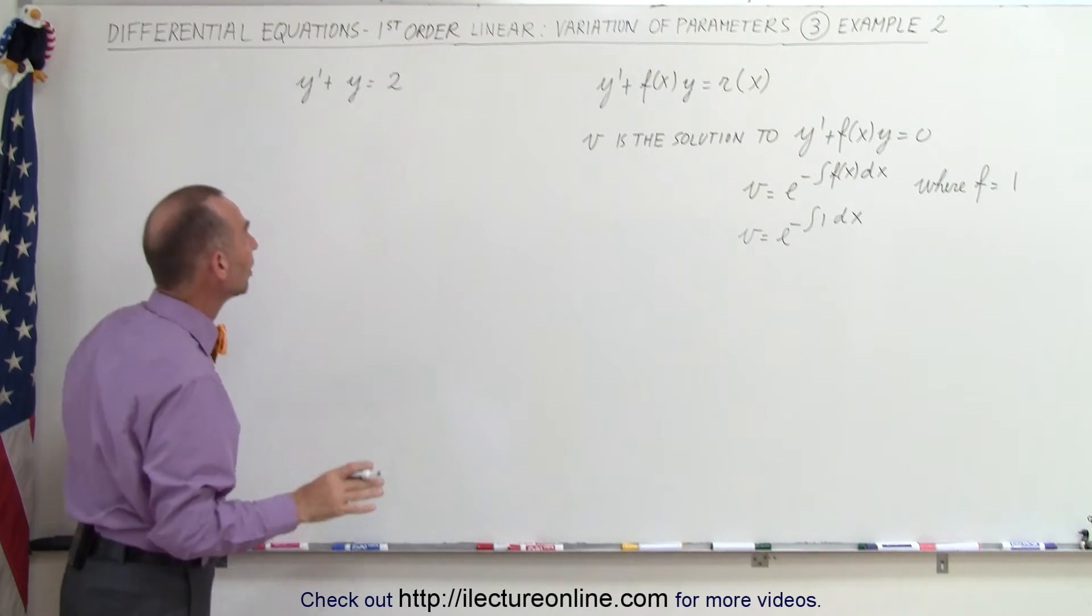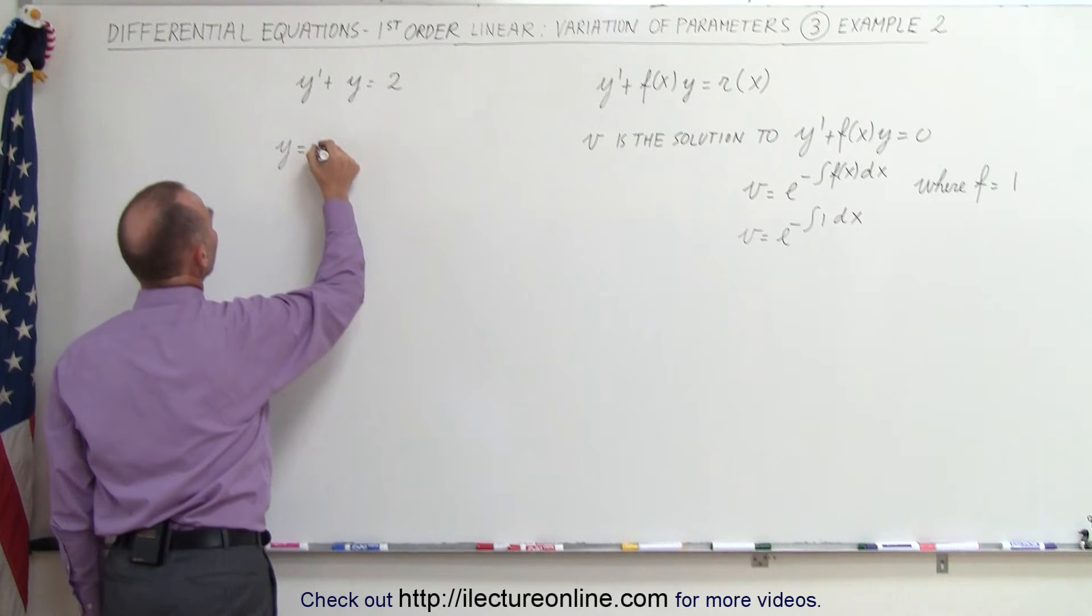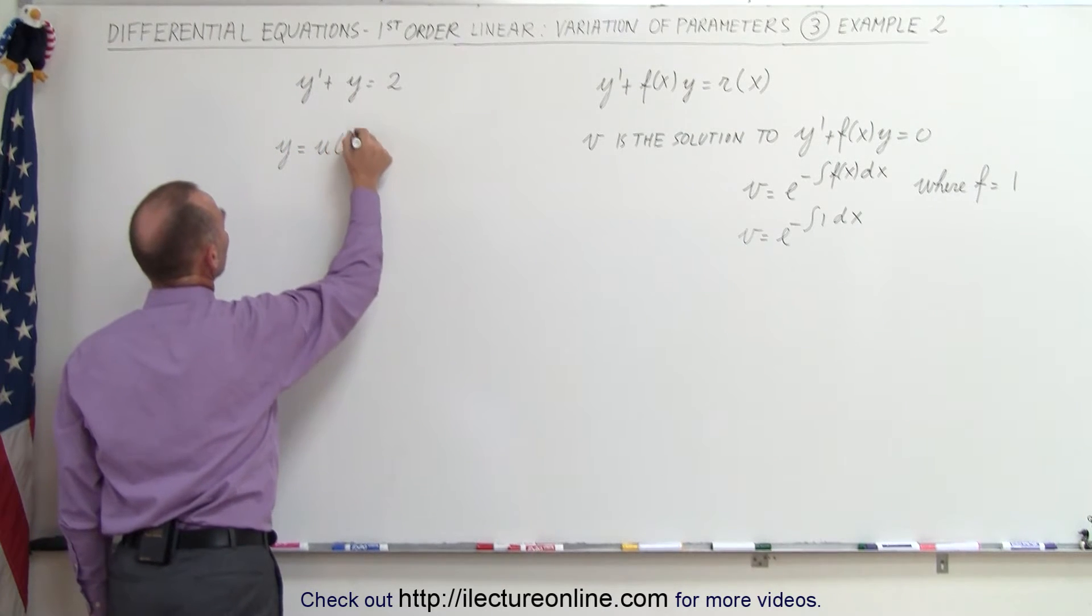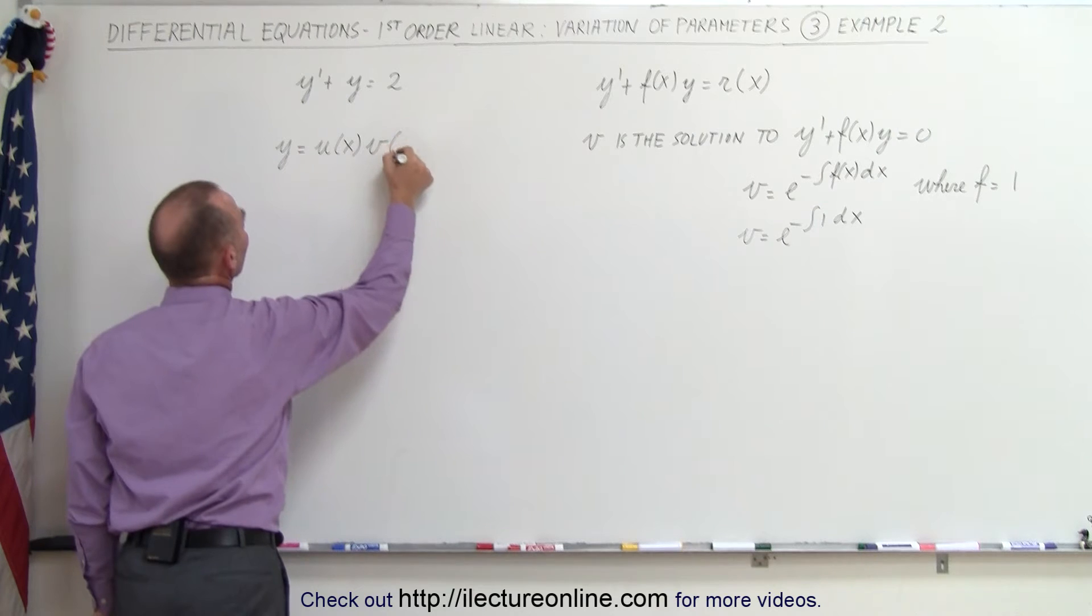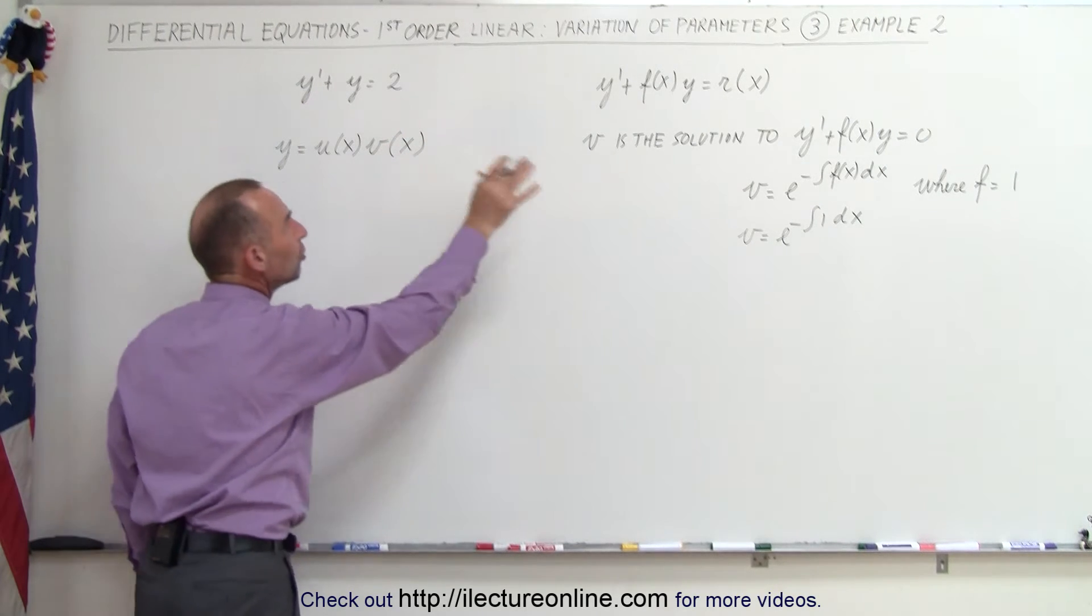Now notice the method of variation of parameters is going to assume that the solution y is equal to simply the product of some function of x called u times another function of x called v, where v is the solution to the homogeneous part.